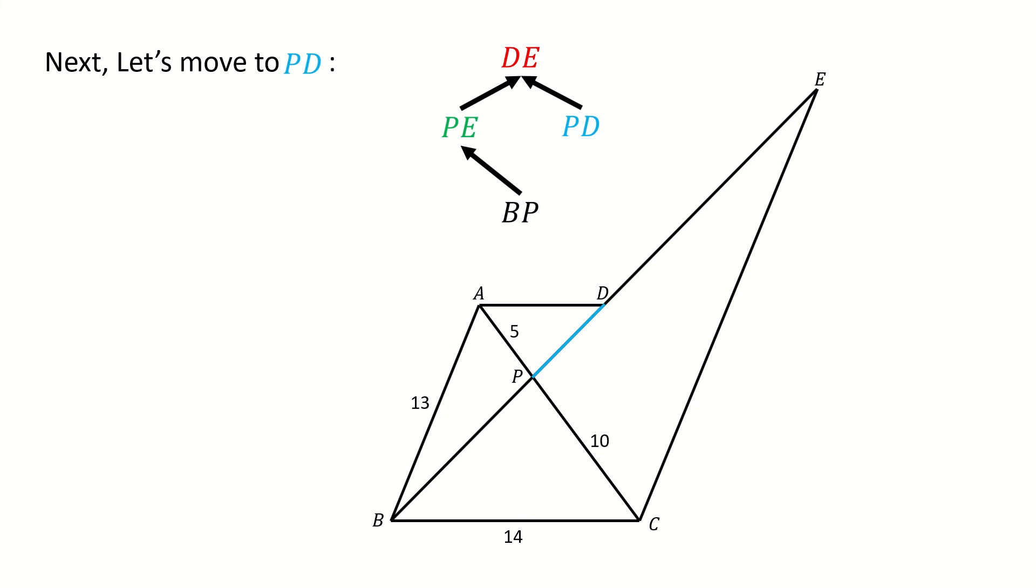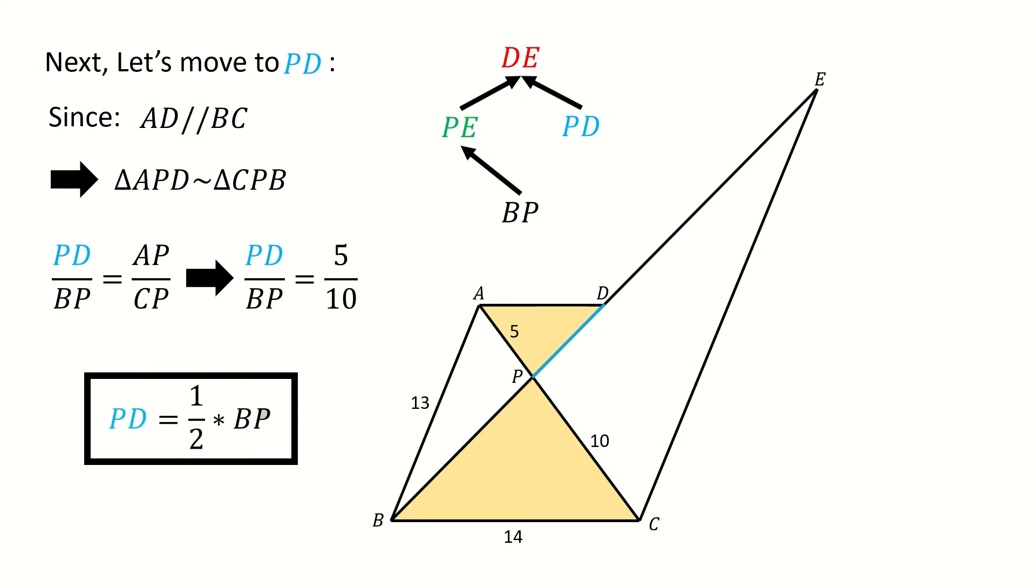Next, let's move to PD. Since AD is parallel to BC, triangle APD is similar to triangle CPB. So PD over BP equals AP over CP, and we are given AP is 5 and CP is 10. So we plug in numbers: PD over BP equals 5 over 10. So PD equals one-half times BP. Now we know the relation between BP and PD. The key thing to solve this problem is to solve for BP.